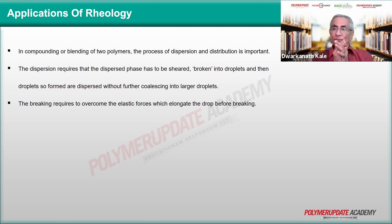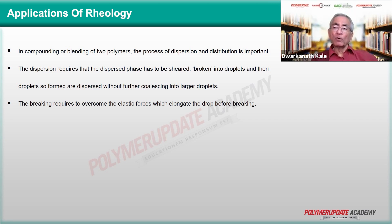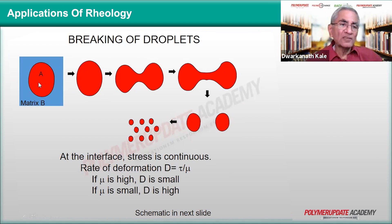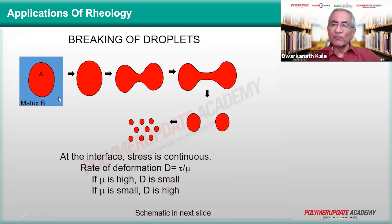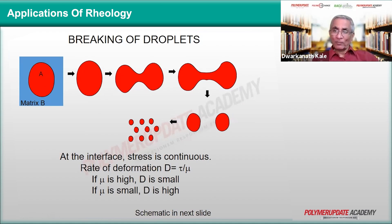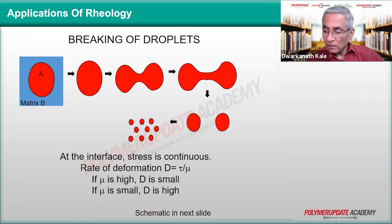Compounding is another example of an extruder application. When you are compounding, you are either blending a polymer with a filler or blending two different polymers together. So how does the mixing process take place? Consider an example where one matrix is being dispersed into another — say matrix A is to be dispersed into matrix B. If one of them is a filler, the filler has to go into the polymer matrix and the agglomerate has to be broken down.